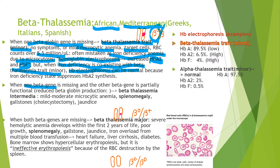When one beta gene is missing and the other is partially functional — producing less beta globin — it is called beta thalassemia intermedia, written as beta-zero slash beta-plus. They have mild to moderate microcytic anemia, splenomegaly, gallstones requiring cholecystectomy, and jaundice. These are caused by hemolytic anemia — RBCs destroyed by the spleen increase indirect bilirubin, resulting in pigment bilirubin stones.